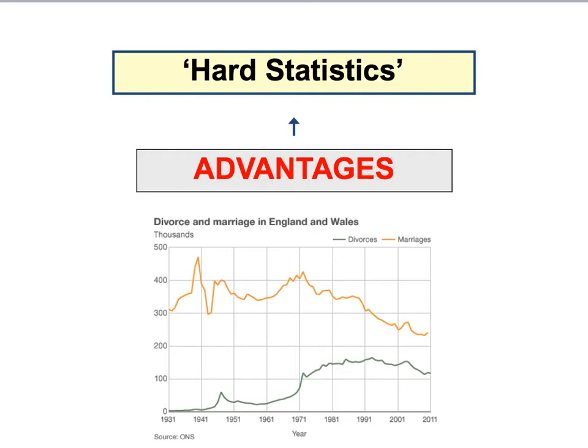Many examples of official statistics are what we call hard statistics, meaning they are unusually both reliable and valid — they accurately measure what they're supposed to (validity), and if somebody checks the data they will get the same results (reliability). Statistics like marriage rates, birth rates, or divorce rates are examples of hard statistics that accurately measure virtually all cases.